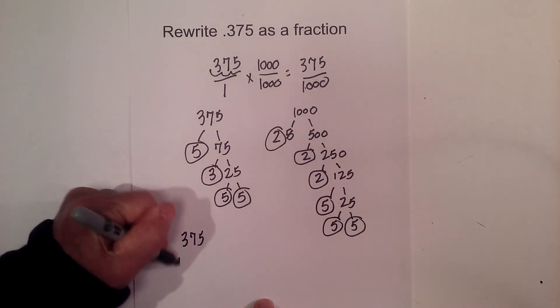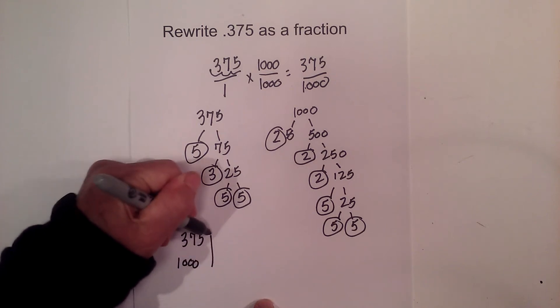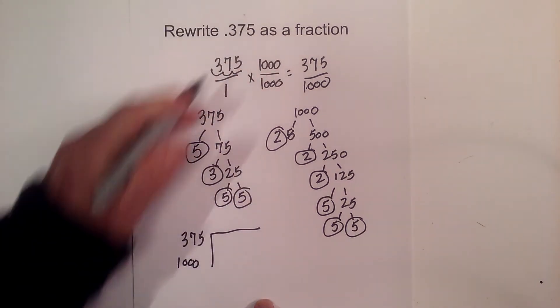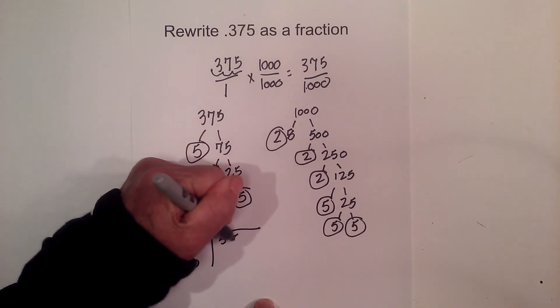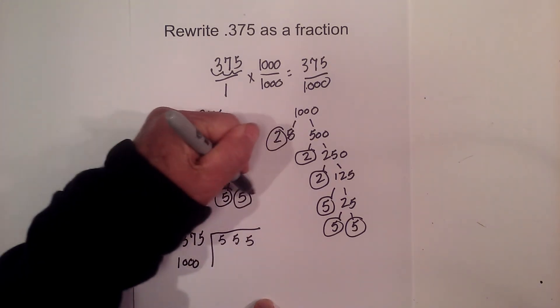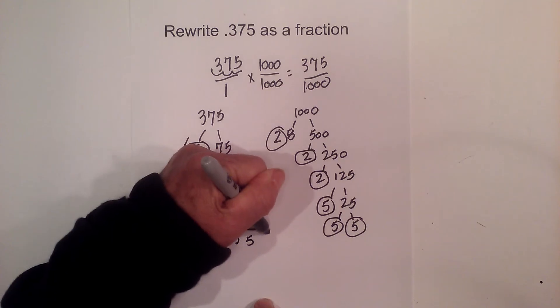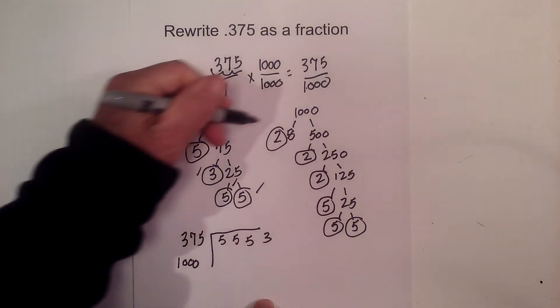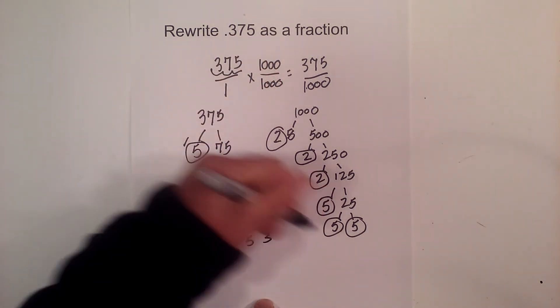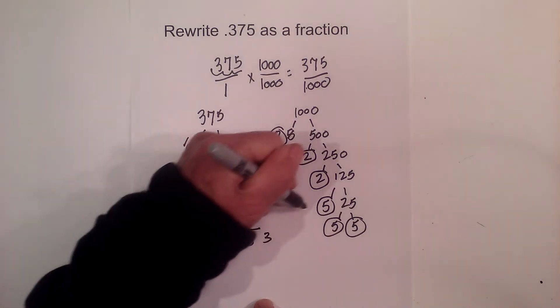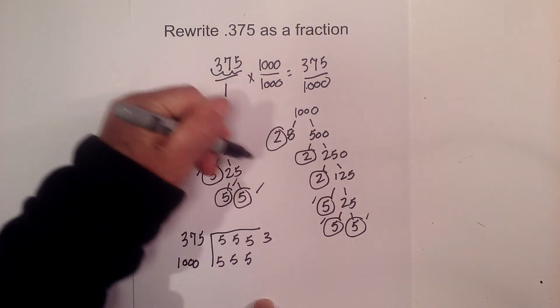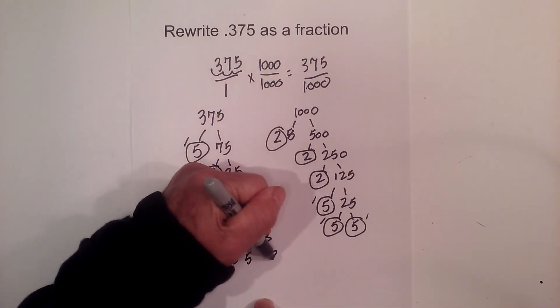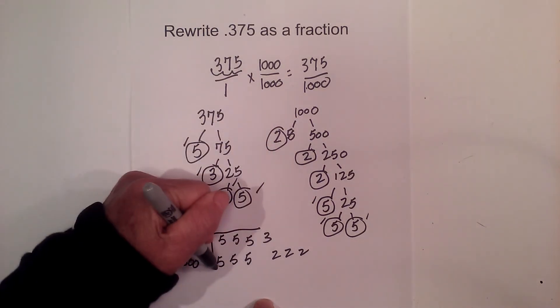So I'm going to write 375 and 1000. Remember, we're still working on the greatest common factor, so we can reduce this fraction. So I'm going to write 5, 5, 5, put a little check by it so I don't make a mistake, and 3. Now we have the 1000, and I'm going to start with the 5s. We have 5, 5, 5, and then it looks like we have 2, 2, 2.